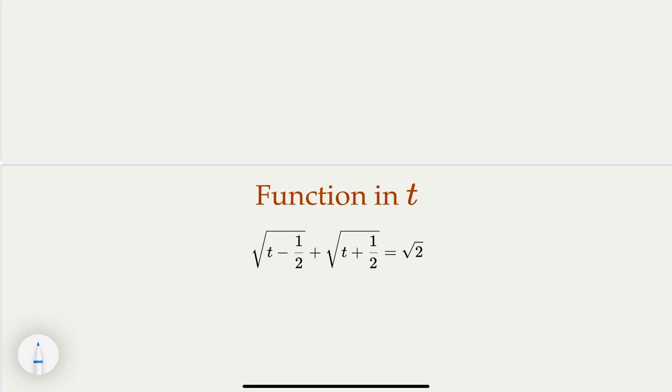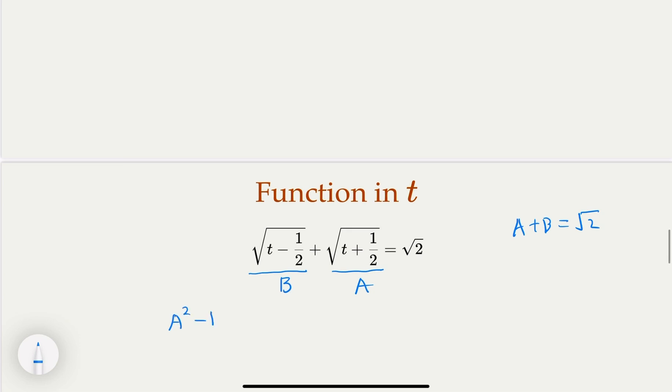Alright, so this is another common trick in algebra. So notice that when you let the first term be b, the second term be a, we know that a + b equals √2, but then a² - b². Let's do that. a² - b². You're going to cancel t because t here is common here. So what do you get? a² - b². You get t + 1/2 - t + 1/2, that equal to 1.